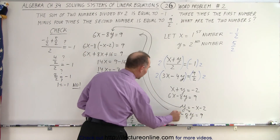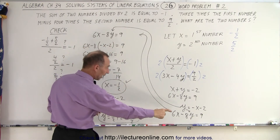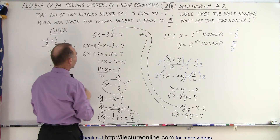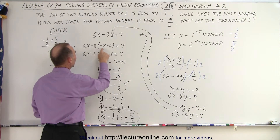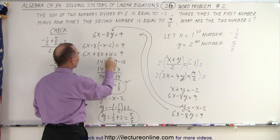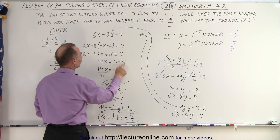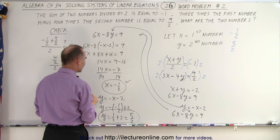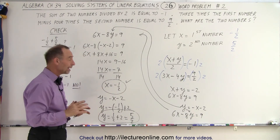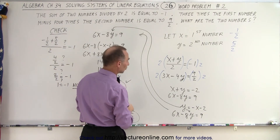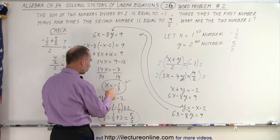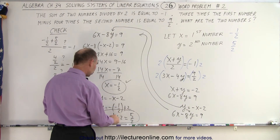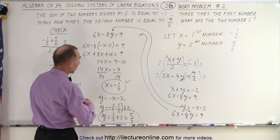We substituted this y into 6x minus 8y equals 9. We replaced y with negative x minus 2. So negative 8 times negative x is plus 8x. Negative 8 times negative 2 is plus 16. So 6x plus 8x is 14x, and 16 goes to the other side as minus 16. 9 minus 16 is minus 7. 14x equals minus 7, divide both sides by 14, giving x equals negative one half. That looks okay. Then we took y equals negative x minus 2 and substituted negative one half in for x, giving y equals positive one half plus 2, which is 5 halves.